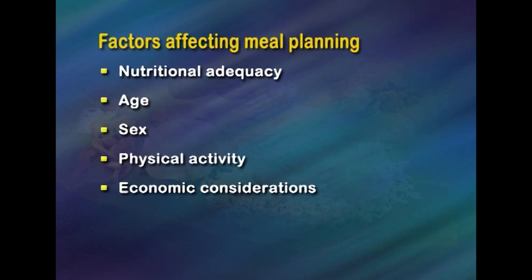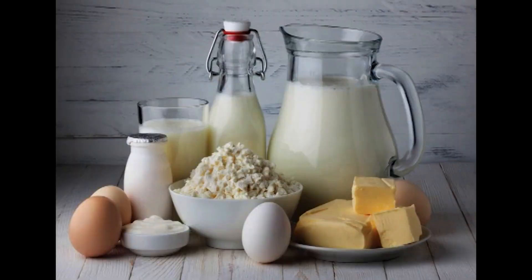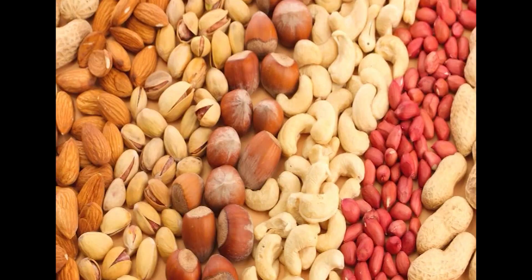For a person engaged in hard work, the body uses up more energy while performing that work, so one should include more energy-giving foods in the diet. Economic considerations: Money available to the family to be spent on food is another major factor. Foods like milk, cheese, meat, fruits, and nuts are expensive. However, alternative sources like toned milk and seasonal fruits and vegetables are less costly and equally nutritious.